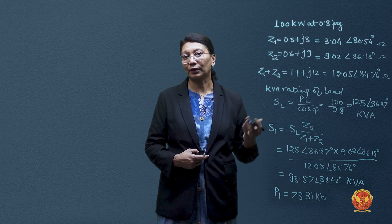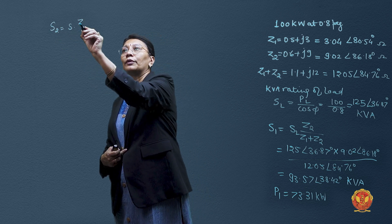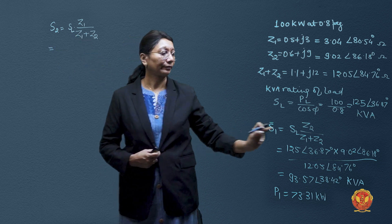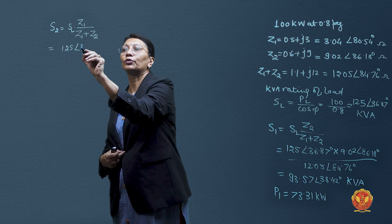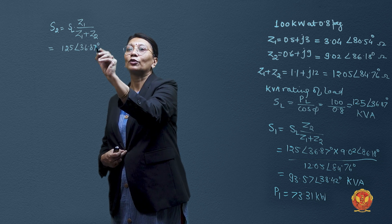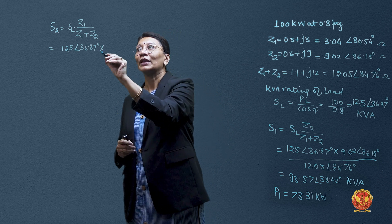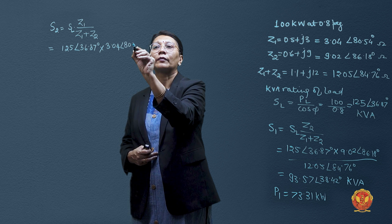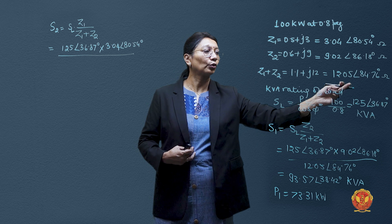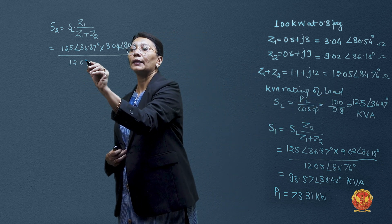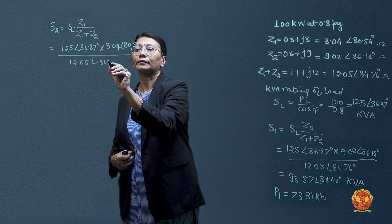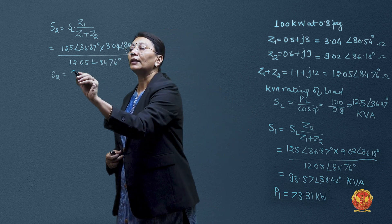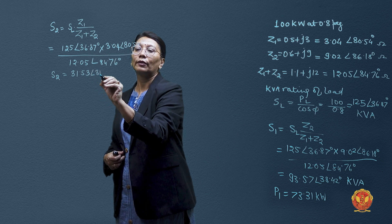On the same lines, when we calculate the load sharing of the second transformer: S2 = SL × Z1 / (Z1 + Z2). The total SL = 125 at angle 36.87° (cos φ = 0.8), Z1 = 3.04 at angle 80.54°, and total transformer impedance = 12.05 at angle 84.76 degrees. Solving this, the volt-amperes shared by the second transformer, S2, comes out as 31.53 at an angle of 31.26 degrees.